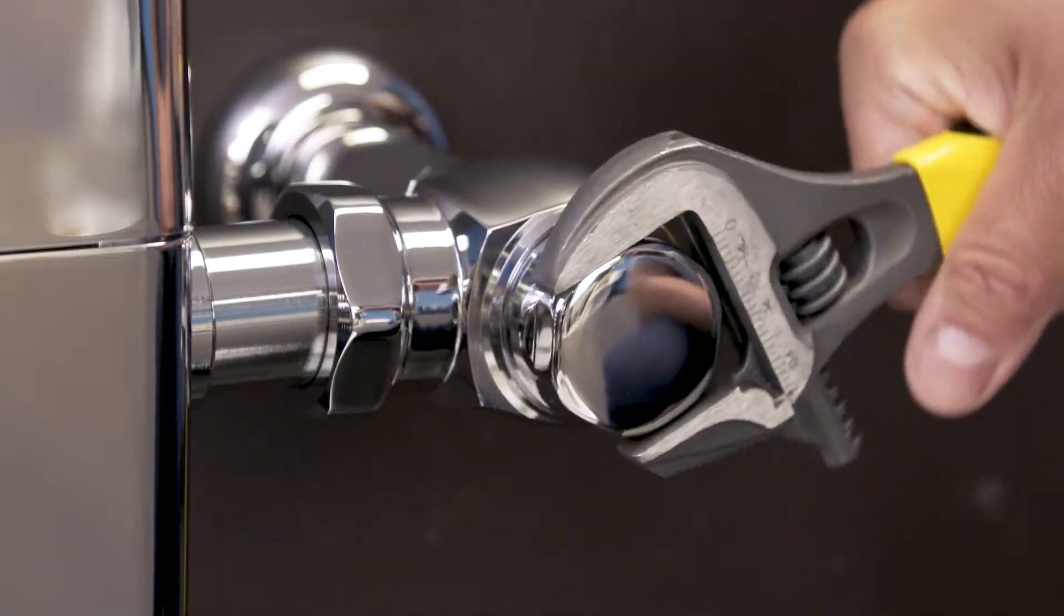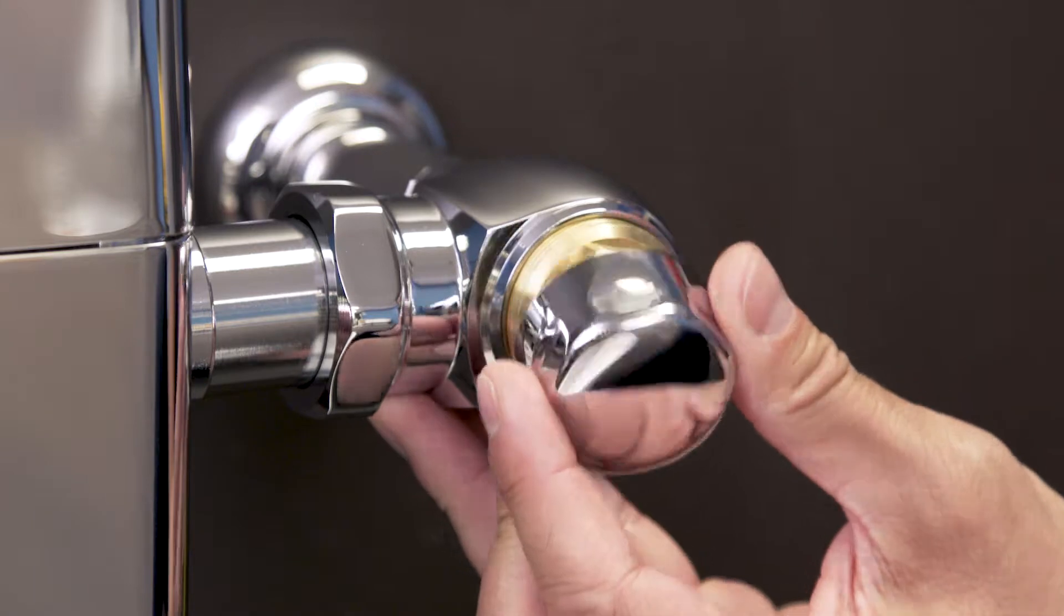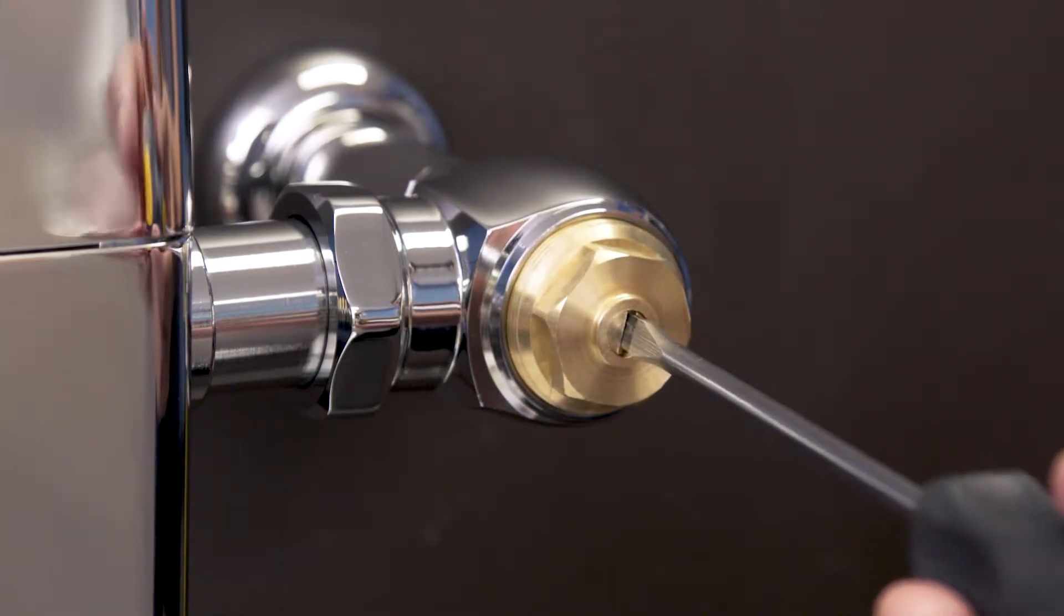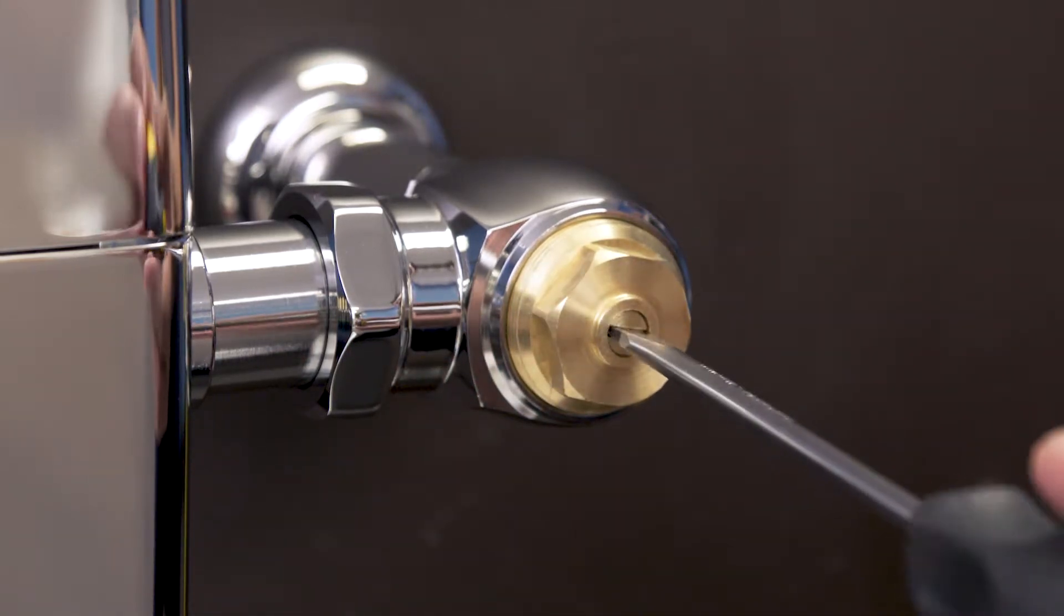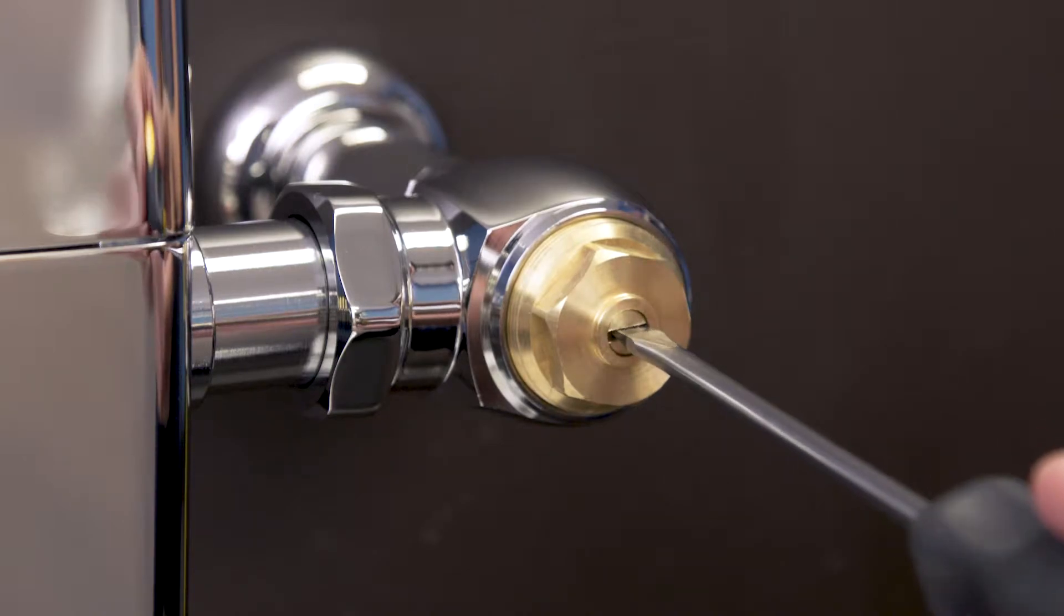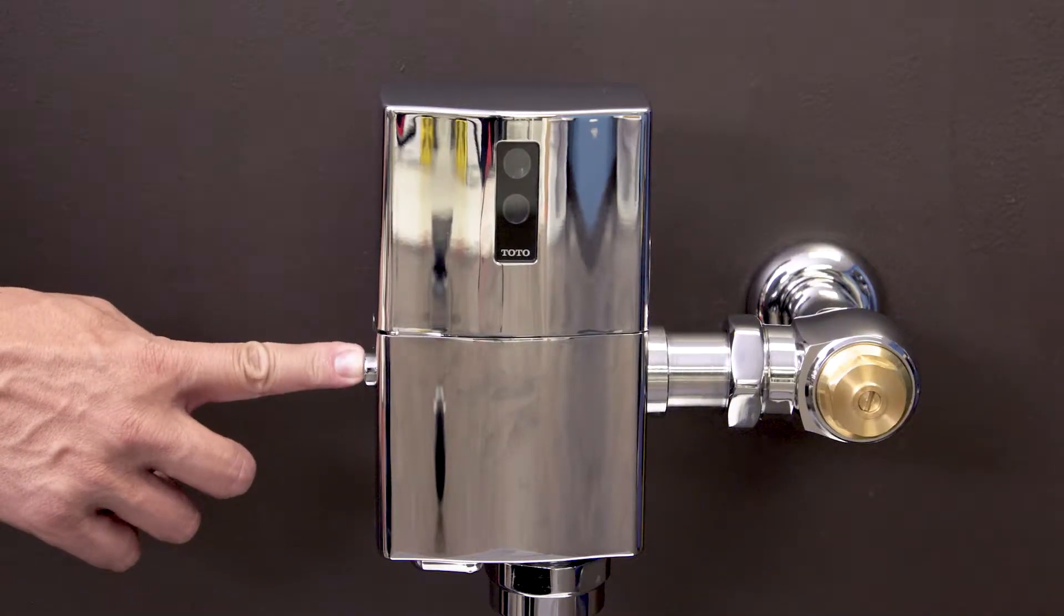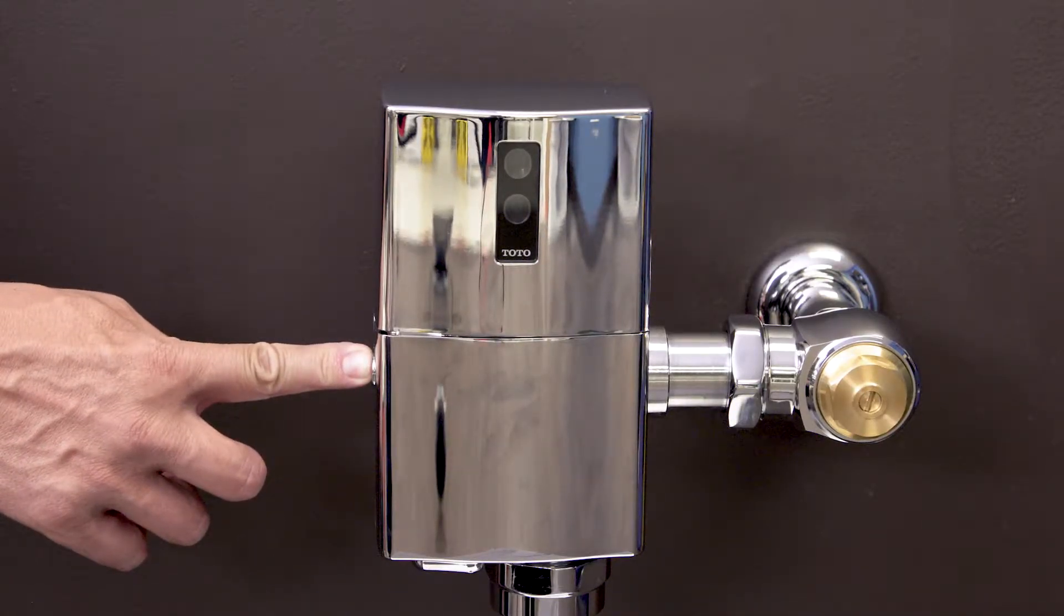First shut off the water to the flushometer. Remove the cap and use a flat blade screwdriver to turn the screw clockwise until the control stop closes. Next, hold down the button to remove any remaining water.